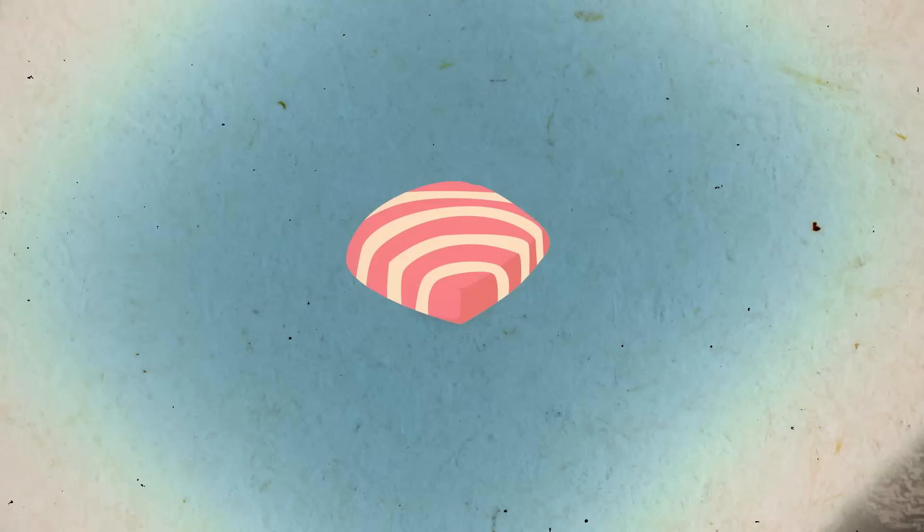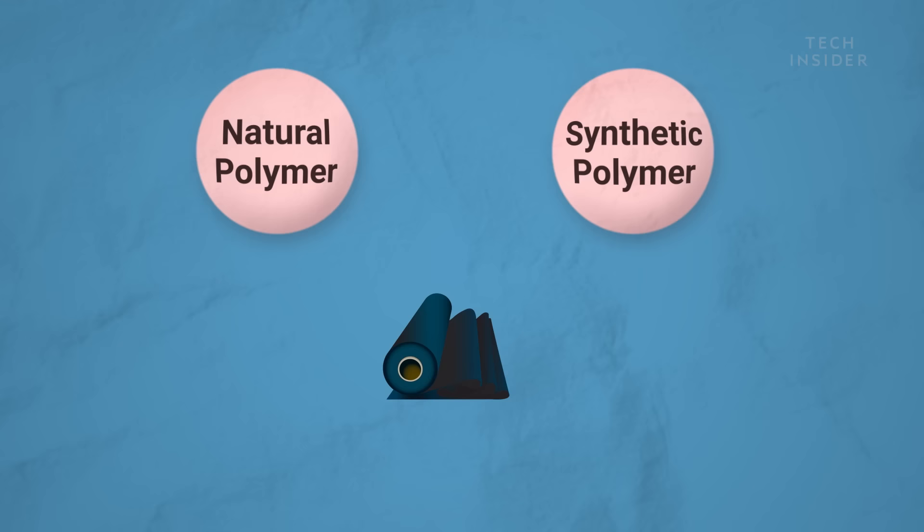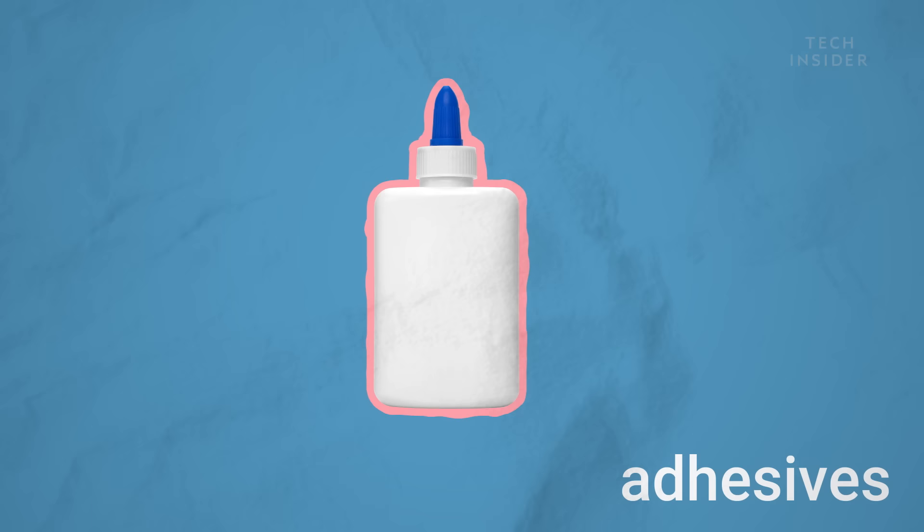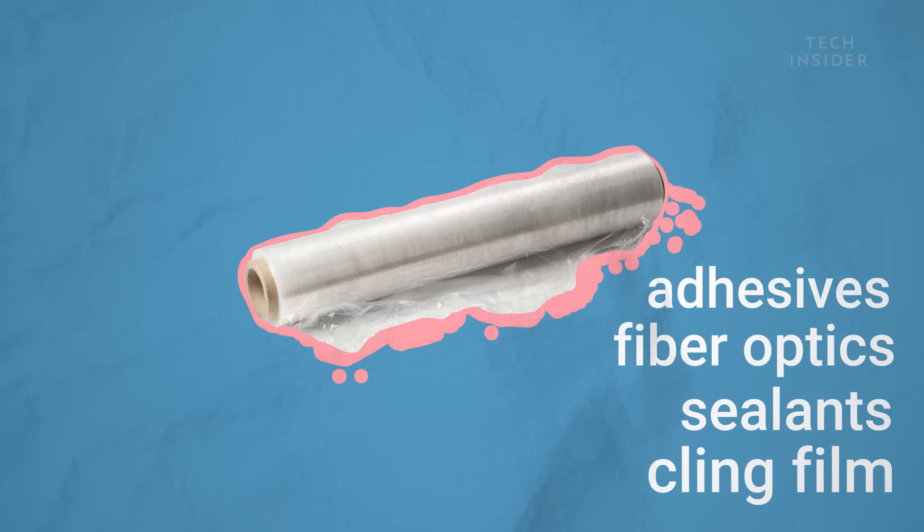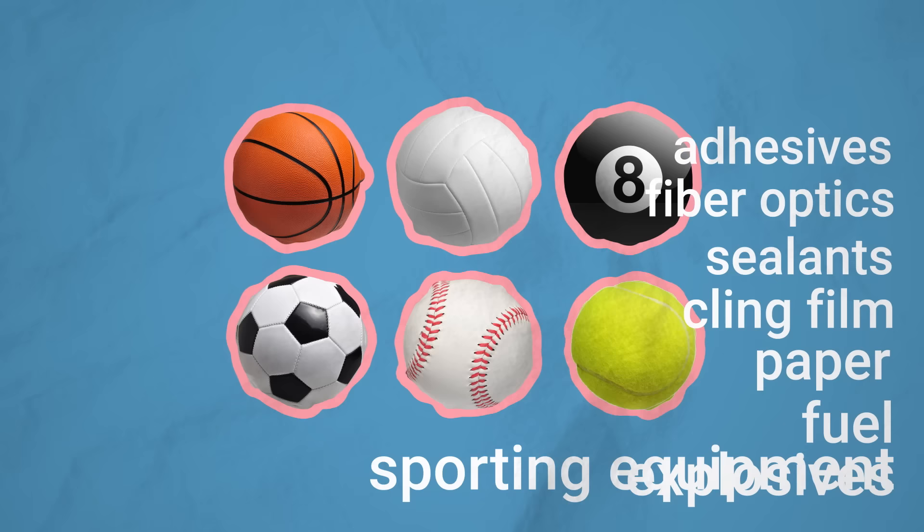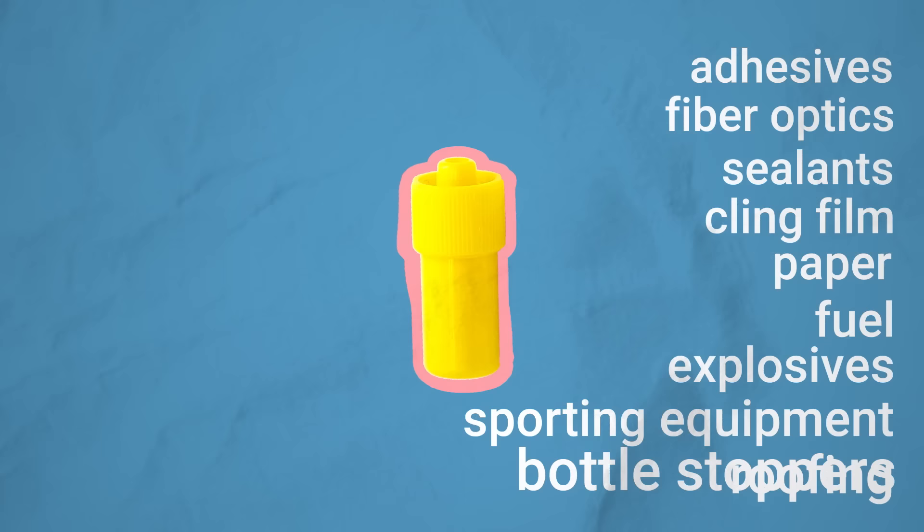However, most gum today is made from natural or synthetic polymers, most commonly butyl rubber. It's used in all kinds of products, including adhesives, fiber optics, sealants, cling film, paper, fuel, explosives, sporting equipment, roofing, bottle stoppers, and tires.